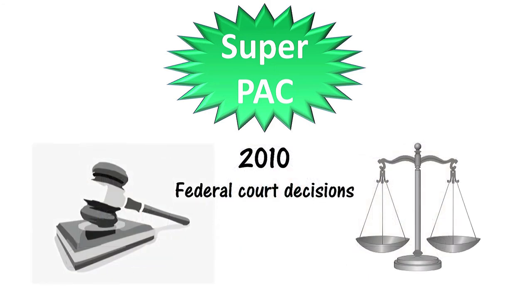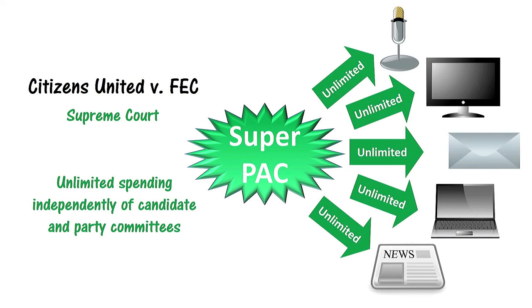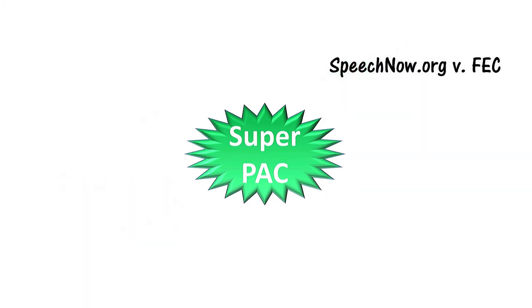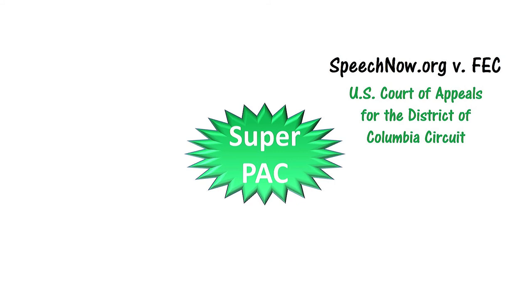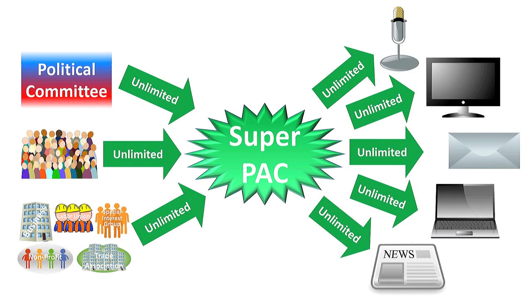Two 2010 federal court decisions facilitated the creation of super PACs by overturning previous campaign finance restrictions. In the Citizens United v. FEC decision, the Supreme Court decided that organizations can spend an unlimited amount on electioneering communications as long as they do so independently of candidate and party committees. And in the SpeechNow.org v. FEC decision, the U.S. Court of Appeals for the District of Columbia Circuit removed contribution limits for donations to committees and organizations that act independently of candidate and party committees. Together, these court cases have allowed super PACs to raise and spend unlimited amounts to influence elections.